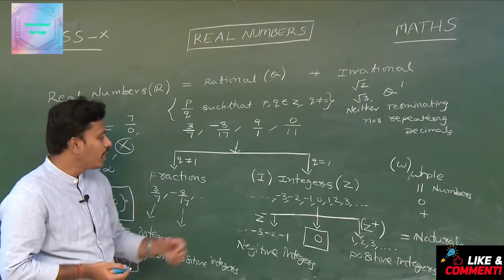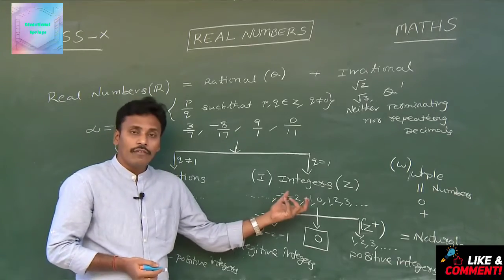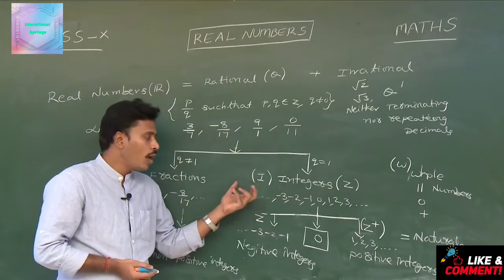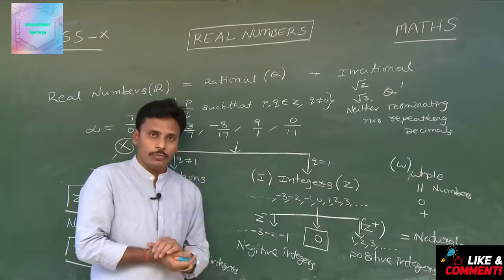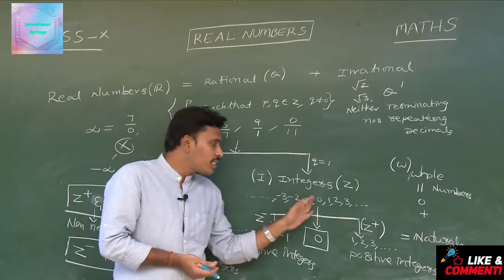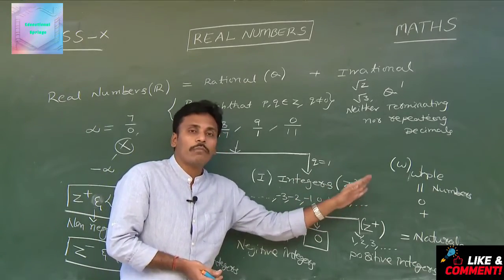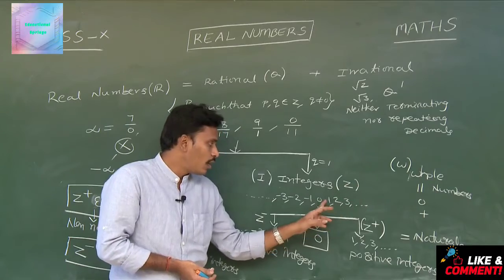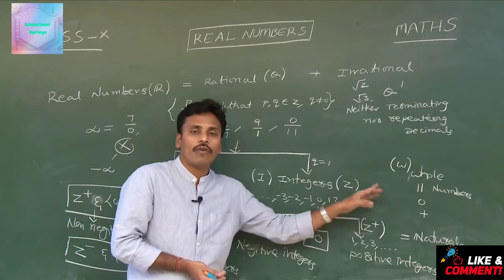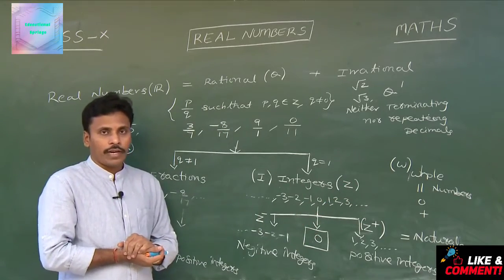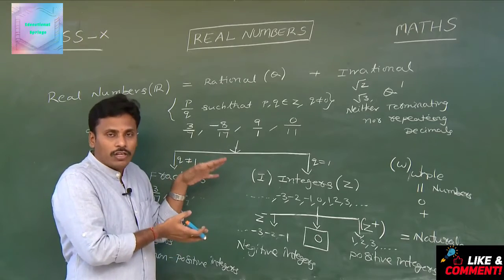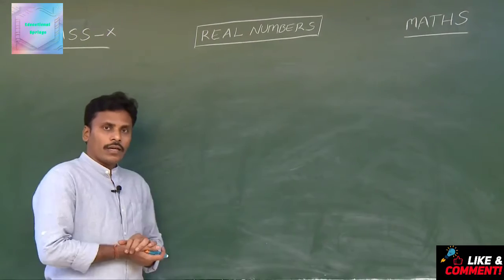Whereas for integers, we don't have a least value or a greatest value, because integers are continuously rising: 1, 2, 3, 4, 5 and so on. This is the complete analysis of the number system.